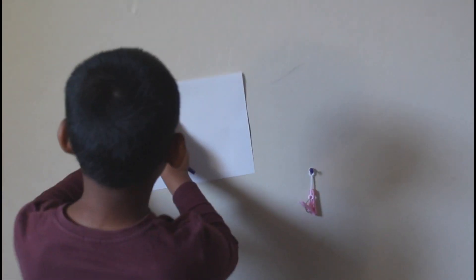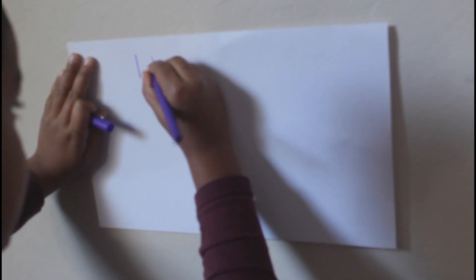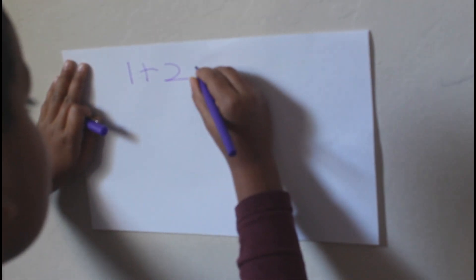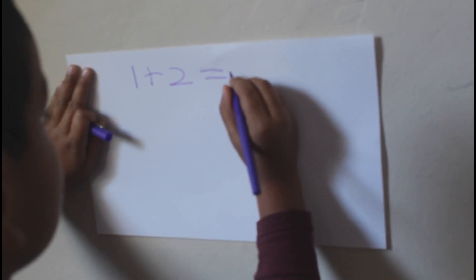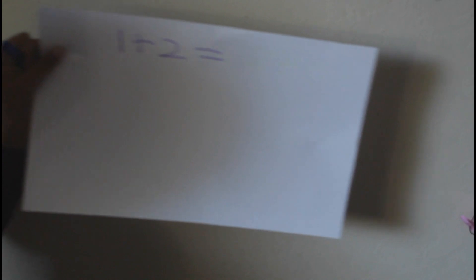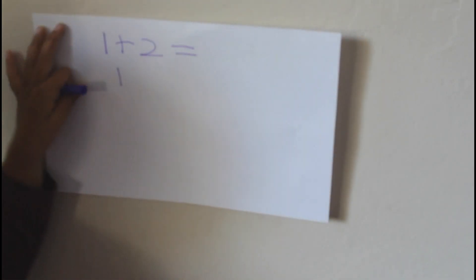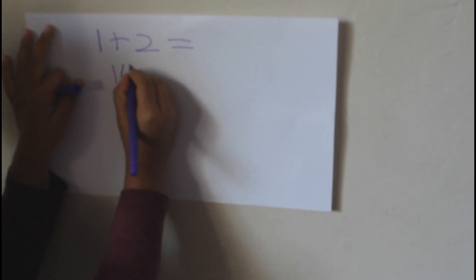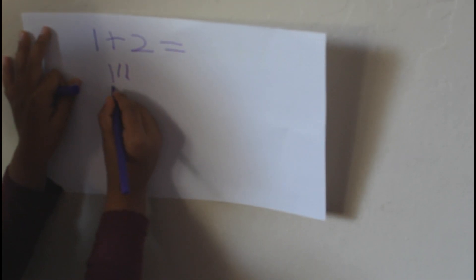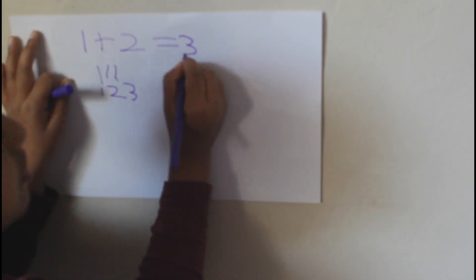Here is one. What is one plus two? There is one, then you add two more. What is that? One, two, three equals three.